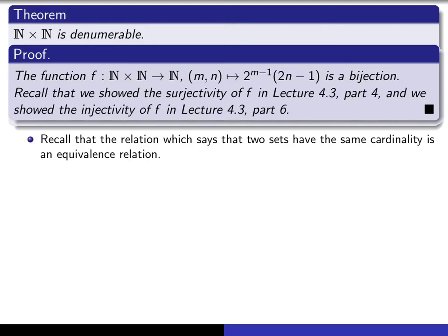So now this gives us the ability to write down lots of other denumerable sets pretty easily, because remember that the relation that says one set is related to another set if it has the same cardinality, if the two sets have the same cardinality, that is an equivalence relation.